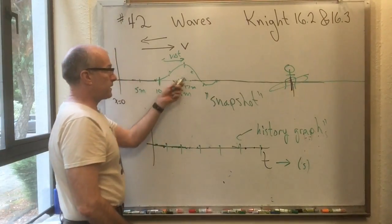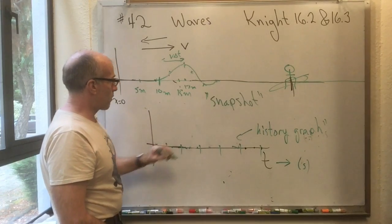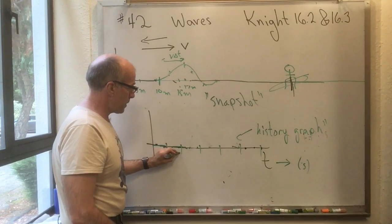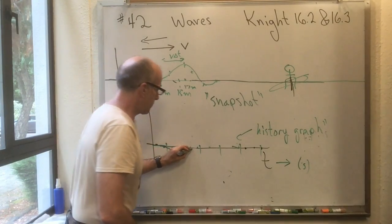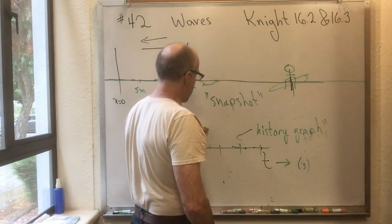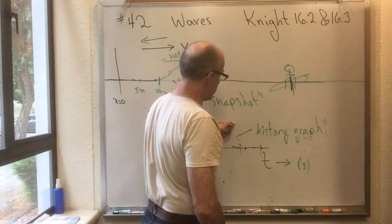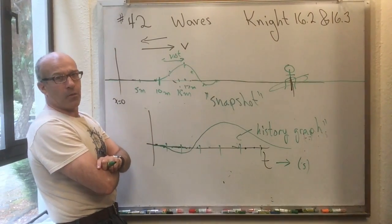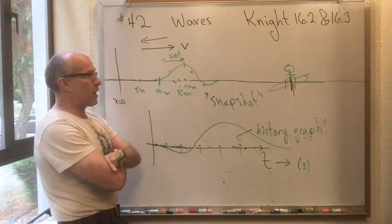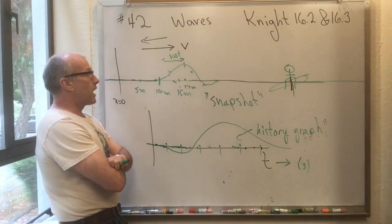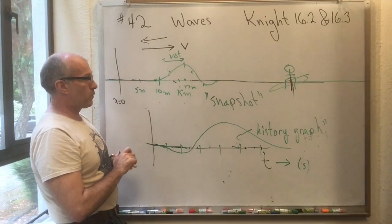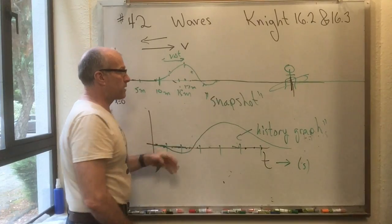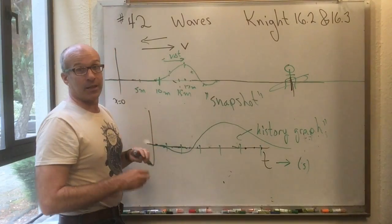Conversely, if the wave is moving through very slowly, the whole wave takes many seconds to pass the surfer. On the history graph, the front trough arrives but takes a long time to reach its minimum, then a long time to reach the maximum crest, and then even longer to settle back to zero. So to summarize: the snapshot and history graphs are mirrored for a rightward-traveling wave, and they can be stretched or compressed relative to each other depending on the wave speed v.